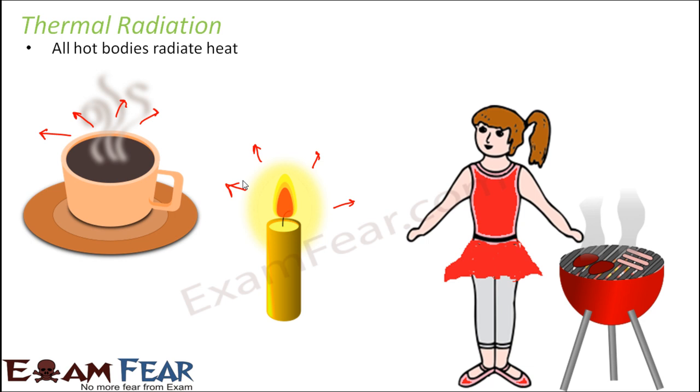What happens when this heat or radiation falls on some other object? We are saying that we radiate heat, but that heat falls on some other object. This radiation falling on any object gets partly reflected, some part of it gets absorbed, and some part also gets transmitted.